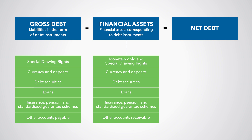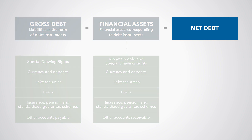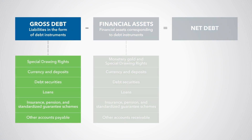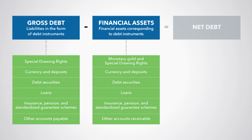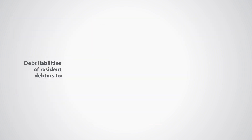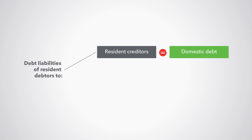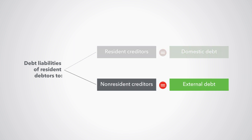We calculate total net debt as total gross debt minus those financial assets that correspond to debt instruments. Debt liabilities owed by resident debtors to residents of the same economy are domestic debt. Debt liabilities owed by resident debtors to non-residents are external debt.